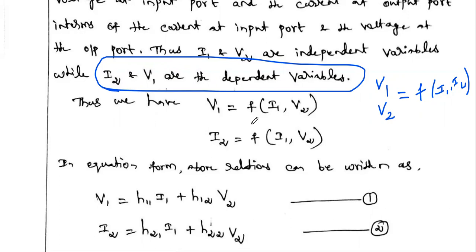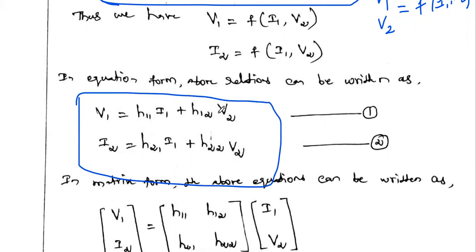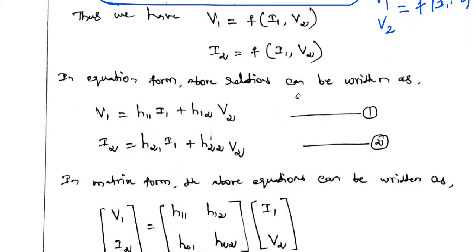Expanding the functions, the input port voltage is: v1 = h11·i1 + h12·v2, and the output port current is: i2 = h21·i1 + h22·v2. These two equations are called the H-parameter equations, where h11, h12, h21, and h22 are called the H-parameters or hybrid parameters.